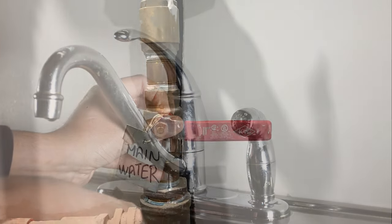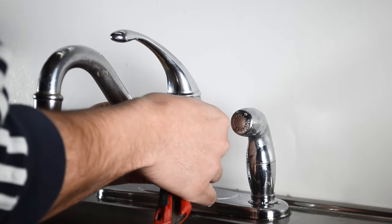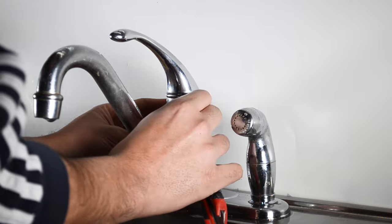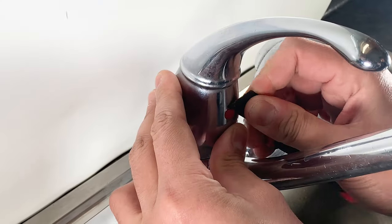To start, remove the faucet handle cap to expose the handle screw. A knife or a flat screwdriver works the best.